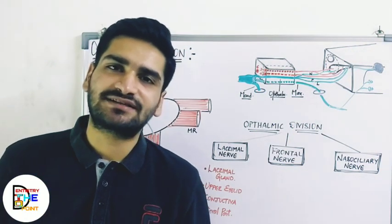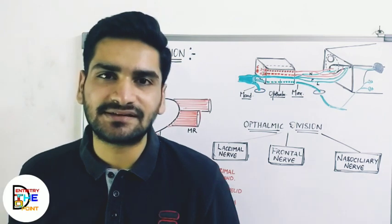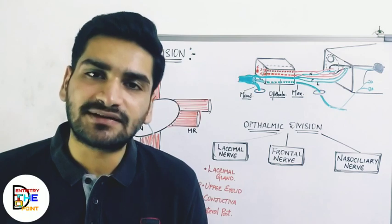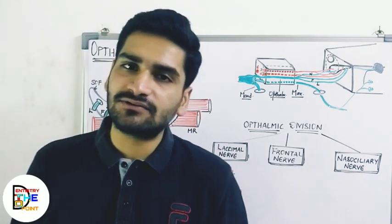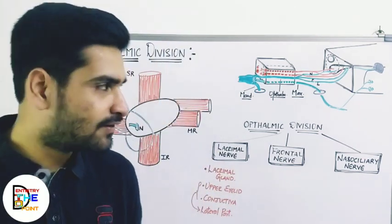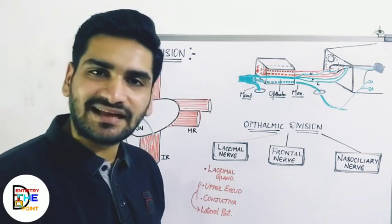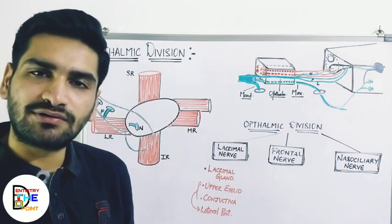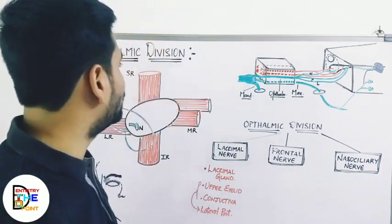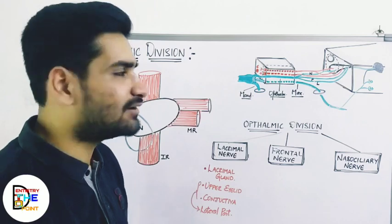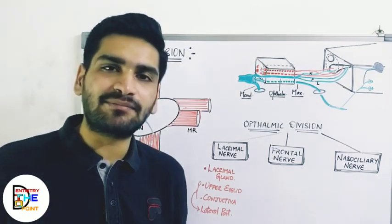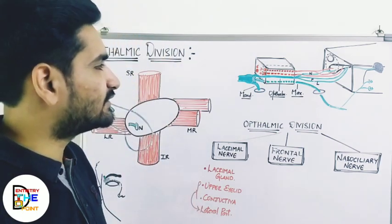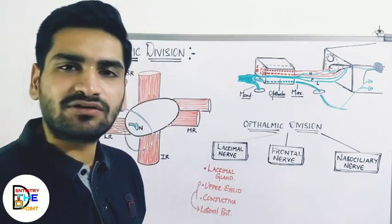Hi everyone, welcome back to our channel Dentistry to the Point. This is Dr. Dhrumil Manik. In this video we are going to study about the first division of trigeminal nerve, that is the ophthalmic division. We have already studied about the second and third divisions — maxillary and mandibular — and their branches. The first division, ophthalmic, is going to have three branches mainly: lacrimal, frontal, and nasociliary.